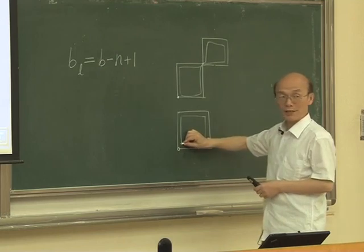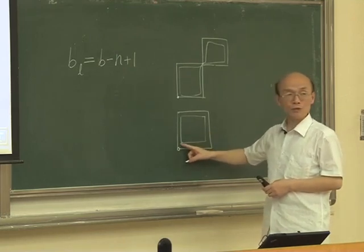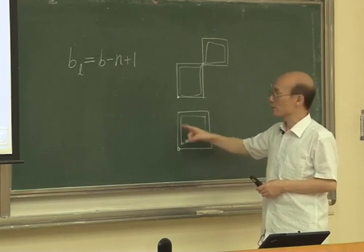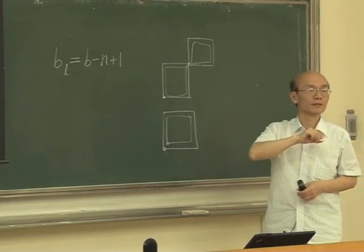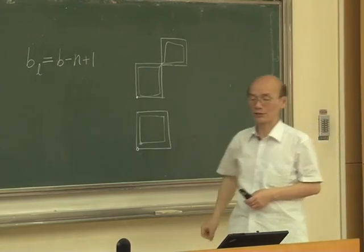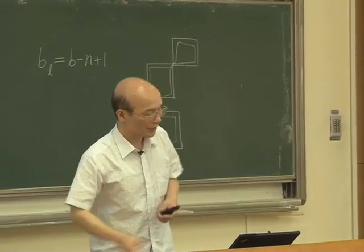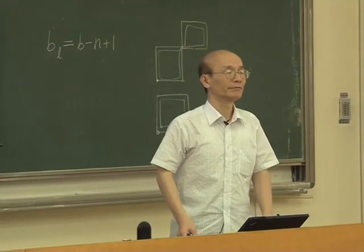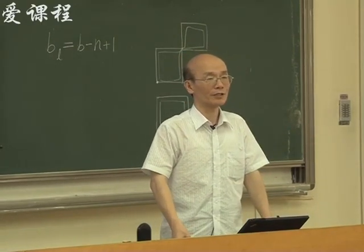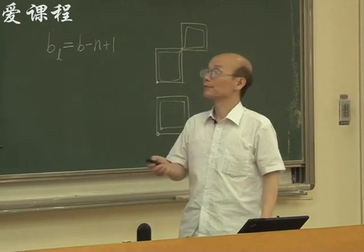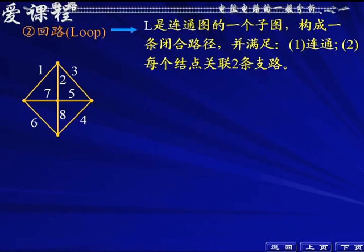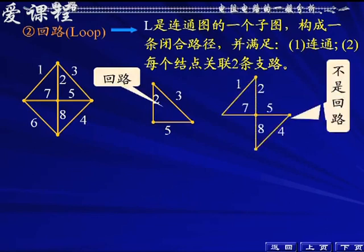回路是这样的：从起节点出发，每个节点经过一次，最后回到起节点——起节点和终节点是重合的，除起终节点以外其他节点只经过了一次。每个节点和两条支路相连，不能和更多的支路相连，否则就不是一个回路。这个图是一个回路；那个图不是回路，因为那个节点和四条支路相关联了。